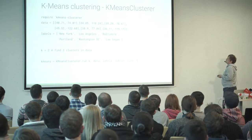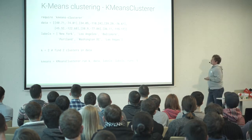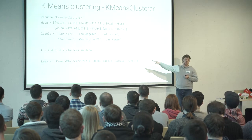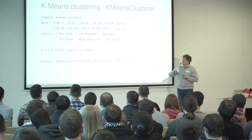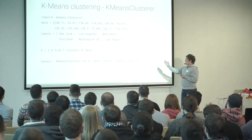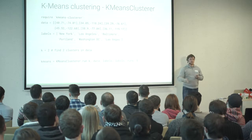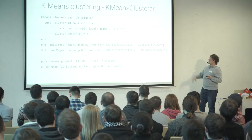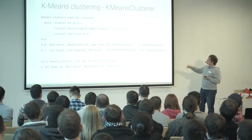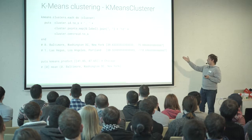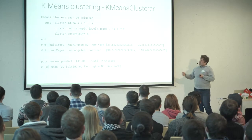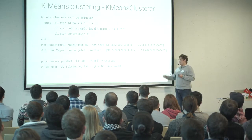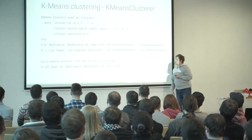Here's an example using k-means-cluster with coordinates of cities: New York, Los Angeles, Baltimore. I said 'here should be two clusters,' created a k-means cluster, added labels, set five runs, and asked it to show me the clusters. It provided: Baltimore, Washington D.C., and New York as one cluster; and Las Vegas, Los Angeles, and Portland as another cluster. Then I asked 'predict where Chicago would be,' and it said 'first cluster: Baltimore, Washington D.C., and New York.'